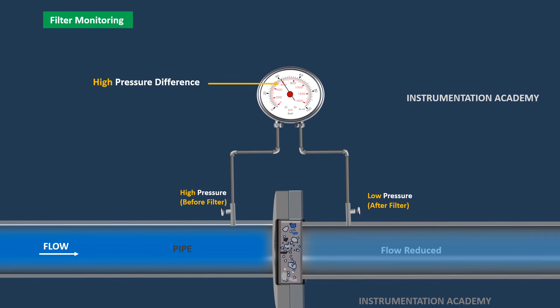When the differential pressure exceeds a predetermined threshold, it signals that the filter is clogged and needs servicing. This allows operators to take timely action, preventing contaminants from bypassing the filter and ensuring that the system continues to operate efficiently.